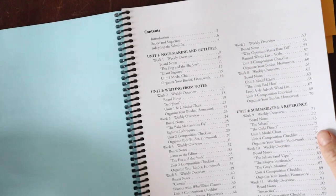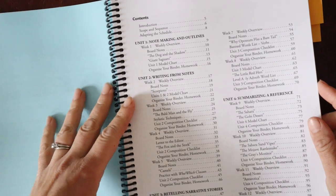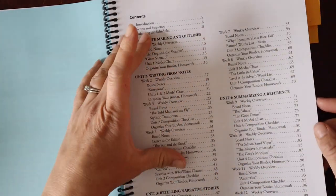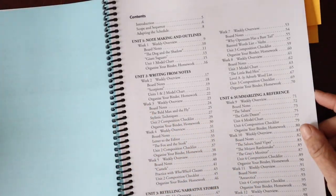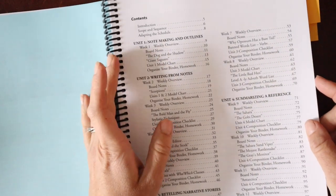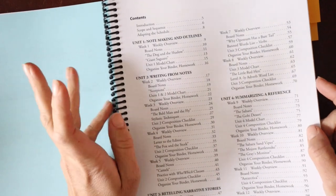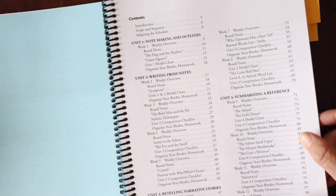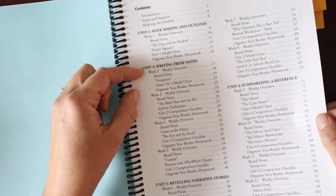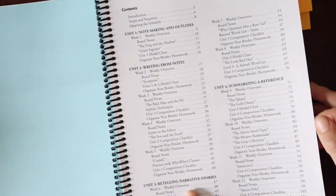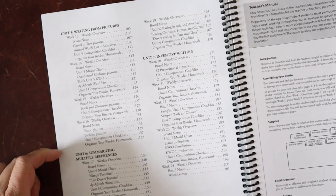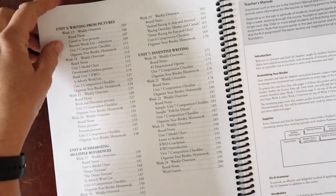Here's accessing your downloads. Then we have our table of contents. This is going to go through the different units of structure and style that IEW teaches. Unit one is note making and outlines, unit two is writing from notes, unit three is retelling narrative stories, unit four is summarizing a reference, unit five is writing from pictures, unit six is summarizing multiple references, and unit seven is inventive writing. I like that they're covering different genres of writing.